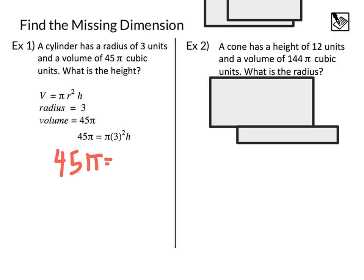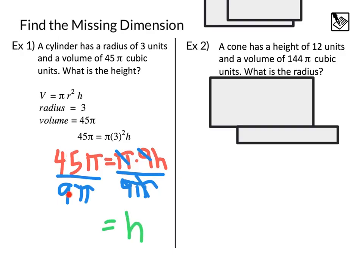Doing that, it looks like we'll have 45 pi equals pi times 3 squared, which is 9h. If we want to solve for h here, I'm going to divide by 9 pi, because 9 pi is going to cancel out my pi and my 9. Pi and pi, 9 divided by 9, leaving me with h equals—here we have 45 divided by 9. 45 divided by 9 is 5, and then pi and pi are going to cancel each other out. So we get an answer of a height of 5 units.